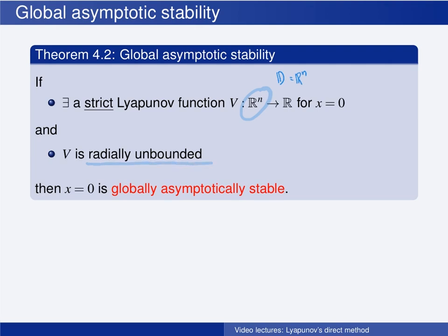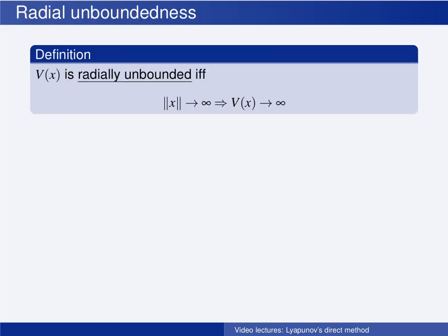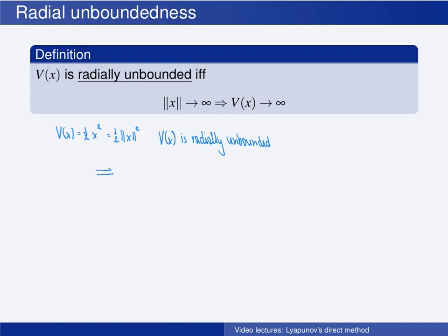What does it mean that the function is radially unbounded? A scalar function V(x) is radially unbounded if and only if, when the norm of x goes to infinity, then the value of the function also goes to infinity. In our example, V(x) equals one-half x squared, which equals one-half times the Euclidean norm of x squared. Clearly, when the norm of x goes to infinity, then V goes to infinity. So V is radially unbounded, and by Theorem 4.2, the origin is globally asymptotically stable.